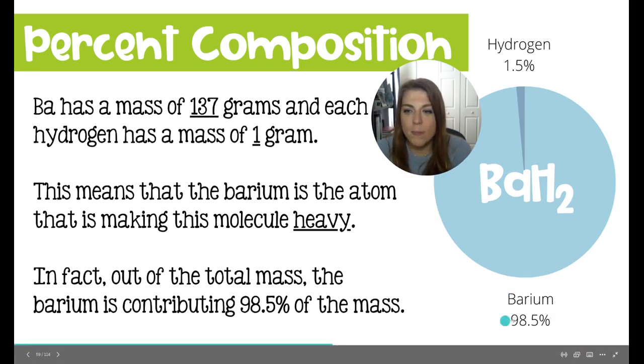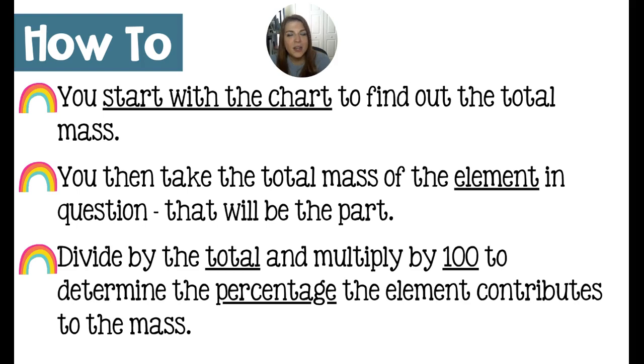How do we figure out how much a particular element contributes to the mass of a compound? Remember that QMT chart? Q stands for quantity, M stands for mass, and T stands for total. You want to find the total mass of the compound and the total mass of all atoms of the particular element in question. Take that mass of the element - that's the part you're looking at - and divide by the total from the QMT chart. Part over whole, then multiply by 100 to convert it into a percent.